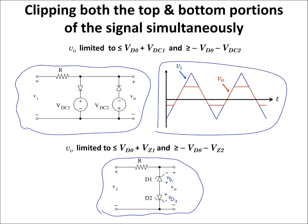In summary, today we looked at clipper or limiter circuits — these are waveform shaping circuits using diodes. We looked at clipper circuits that cut the top portion of the input signal, cut the bottom portion, or cut both the top and bottom portions of VI simultaneously. We also looked at circuit configurations used to adjust the limiting voltage level in clipper circuits. Thank you for watching.